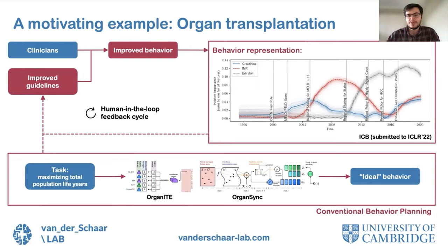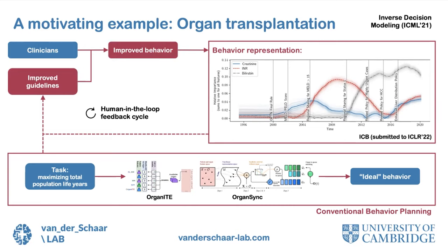Using behavior representations like this, new and improved guidelines can be generated in a more systematic way. Once a new guideline is introduced, say based on a method like Organite, its impact on clinical practice can be assessed using quantitative epistemology. Then adjustments can be made accordingly, either to the guideline itself or the models used to identify ideal ways to behave, again using quantitative epistemology to assess the effect of those adjustments. Guidelines and the resulting behavior can be kept improving like this in a closed loop.